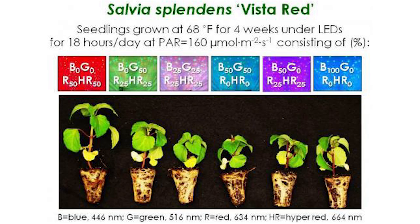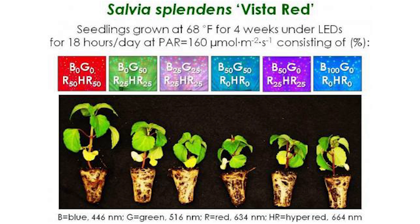We're going to take a look at a quick study done at the Michigan State University Extension from the Department of Horticulture. They did a study on how plants grew under a combination of color spectrum. They used a plant called Vista Red — it's not an aquatic plant, but the concept is roughly the same. They started from a seedling and grew it for four weeks under LEDs for 18 hours a day at 160 PAR. The letters represent the colors — blue, green, red, and hyper red — and the numbers next to them are the percentage of that color used.